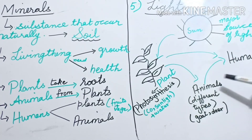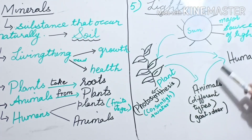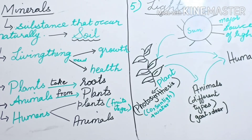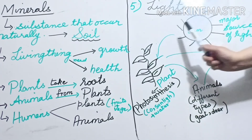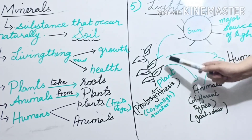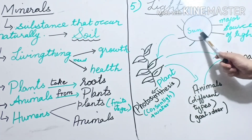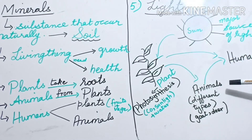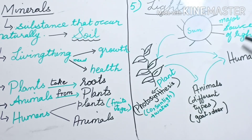Different kinds of animals — like goats and deer — when they eat the plant, they get the sunlight energy. When humans eat plants or animals, that sunlight energy is transferred to the human body. So there is a cycle: sunlight is taken by plants, plants make their own food, that food is eaten by animals who get the sunlight energy, and then humans get the sunlight energy through the animals when they eat them.